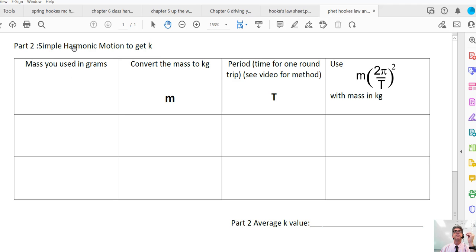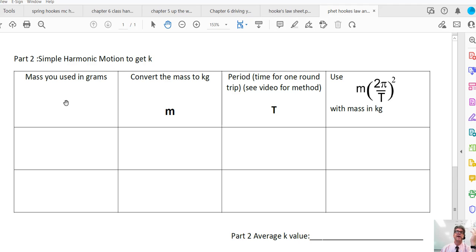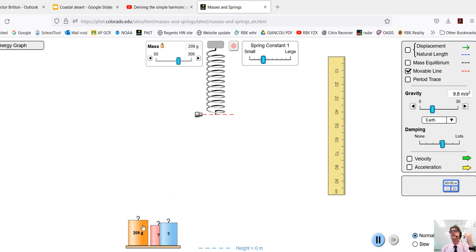So for the simple harmonic motion, you don't need to use the same mass, so if you use the same mass, great, but you don't have to use the same mass that you used in part one. You're going to convert that to kilograms, and I need to show you how to get the period for this because it's a little tricky. Unlike the lab, I don't want you to have to do 30 counts. So we need to get rid of the damping here so it actually bounces. Notice I moved that slider over so there's no damping. I don't need this anymore either, so I can just unclick that so it's not there.